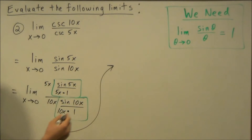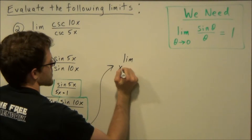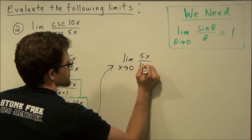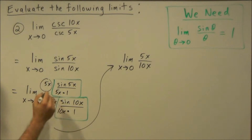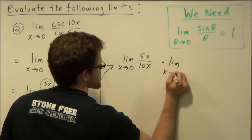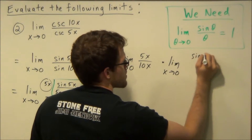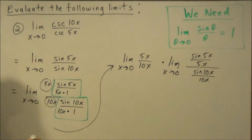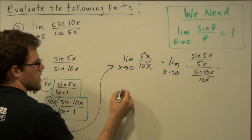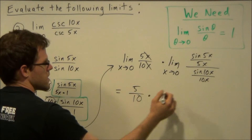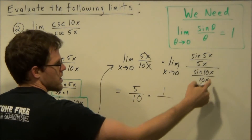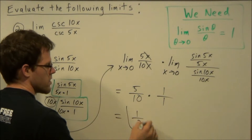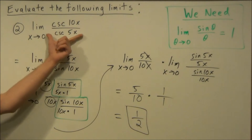Simplifying, the sine-over-argument portions cancel to one, and we're left with five x over ten x for the remaining terms, times the limit of sine five x over five x all over sine ten x over ten x. The x's cancel, giving five over ten. Both sine limits go to one by our formula, and five over ten reduces to one half. So the answer to the second problem is one half.